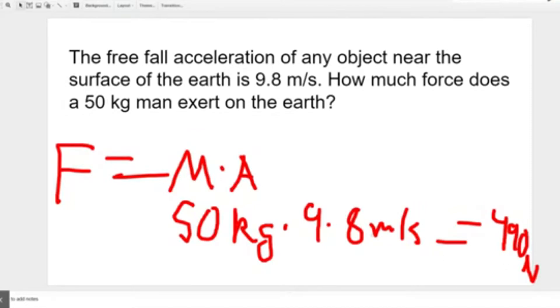However, that is the force on the man. We need to find the force the man exerts on the earth. Because of Newton's third law, we know that the forces exerted are opposite and equal. So he exerts 490 newtons from the earth away from the earth, away from the center of the earth.